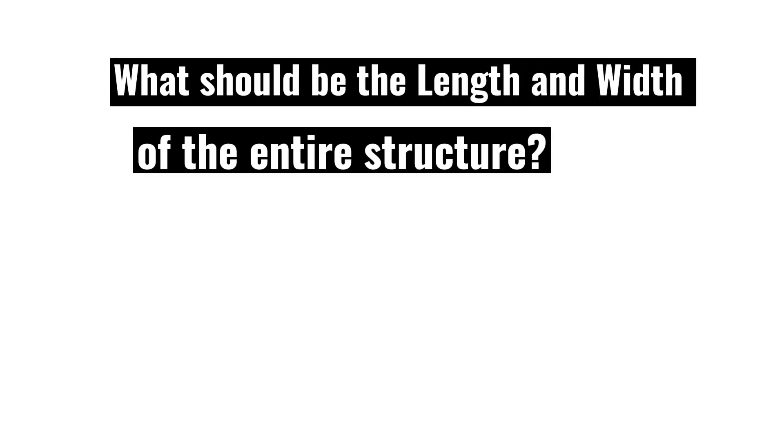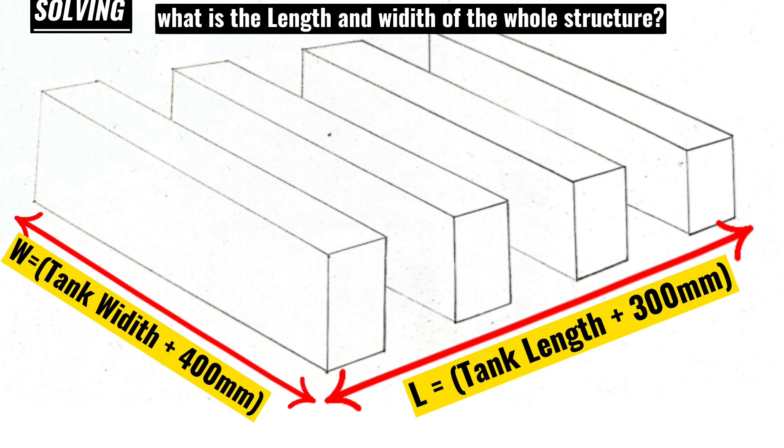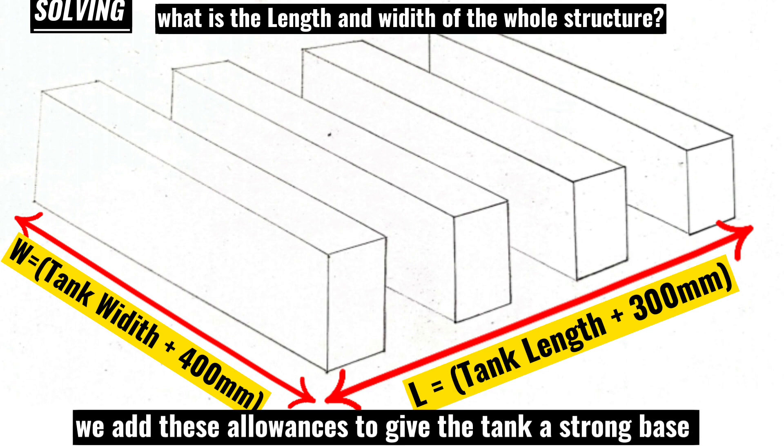The other question is, what is the length and width of the entire structure? Along the length, we get the tank length plus 300mm. For example, if the tank is 4 meters along the length and 3 meters along the width, the external distance for the structure will be 4.3 meters along the length and 3.4 meters along the width. We add these extra distances to give the tank enough and strong base where to sit.